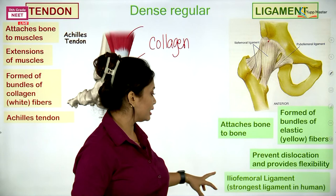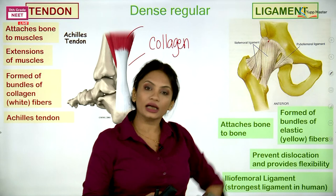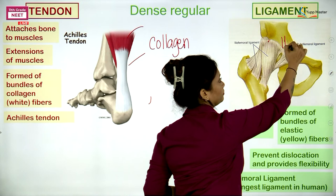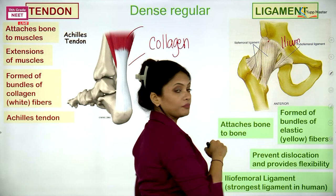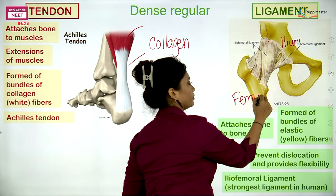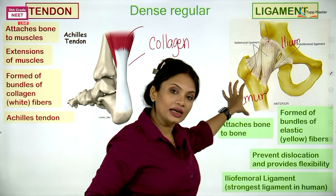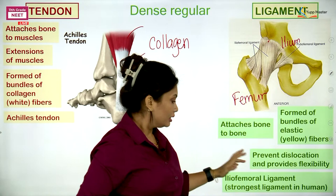In the hip joint, the hip bone has a part called the ilium (I-L-I-U-M), and the thigh bone is called the femur. The ligament joining the ilium and femur will be known as the ileofemoral ligament.